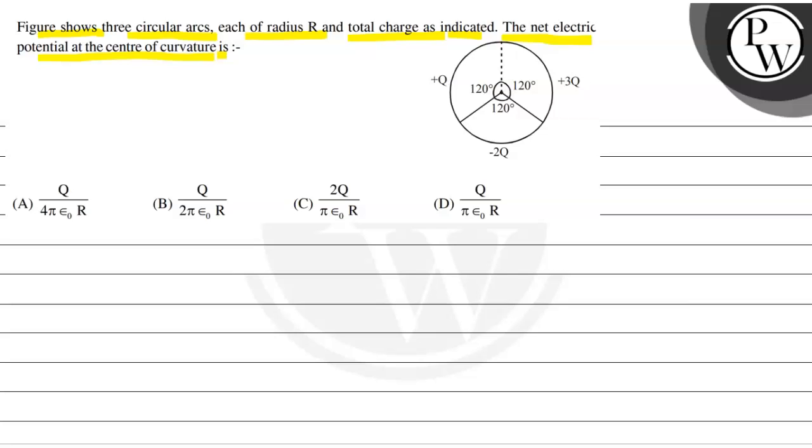We have to choose the correct option. So students, this is a simple example of the key concept. The key concept is electric potential. We have electric potential V is equal to 1 upon 4 pi epsilon 0, q upon r. This is constant value, q is equal to charge and r that is equal to distance.